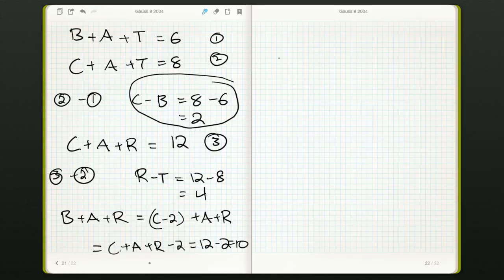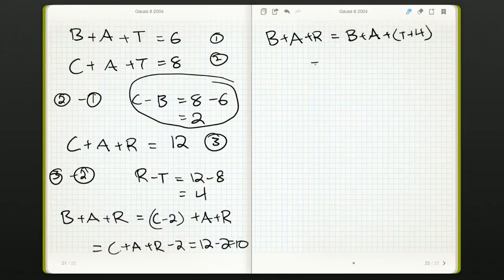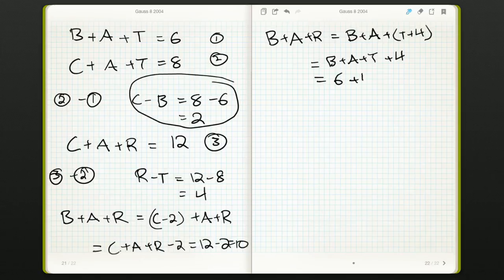Alternatively, we could have used the second piece of information we got. We know what bat is. So, bar, well, that's just B plus A. R is just T plus 4. So, this is bat plus 4, which is 6 plus 4. Again, we get 10. So, there were two ways we could have done this. Either way we did it, we get an answer of 10.